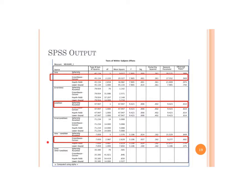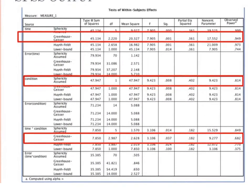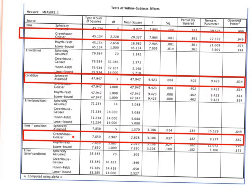Reading the SPSS output, we start with the interaction. The assumption was violated, so we read the Greenhouse-Geisser line. The significance value is 0.037, indicating a significant interaction, with a partial eta-squared of about 0.18 — a very large effect. The main effects for exercise type and for time also show significant differences, but those don't matter since we have a significant interaction. We proceed to the simple effects test as our post-hoc.